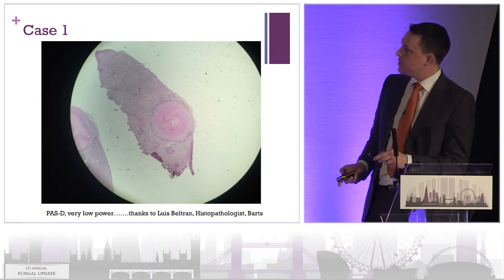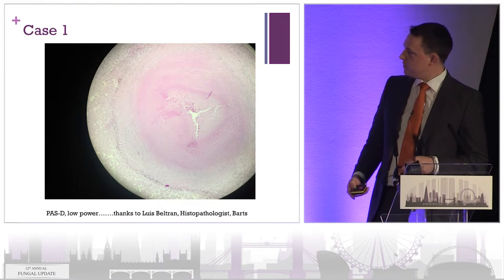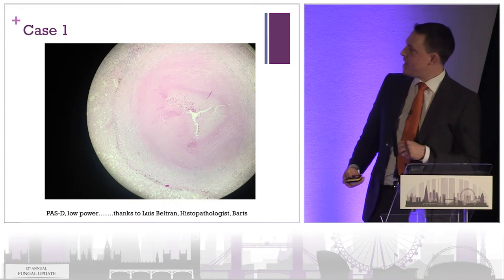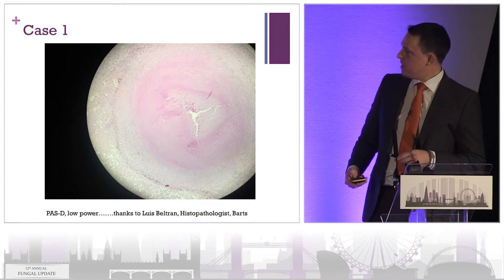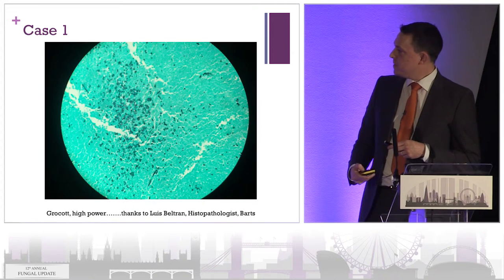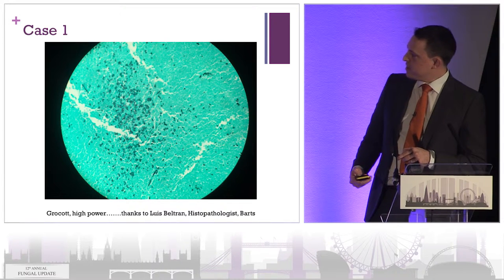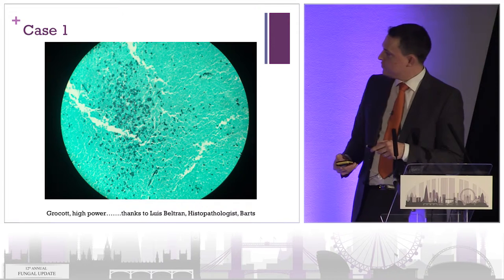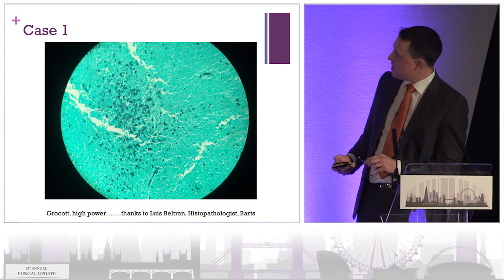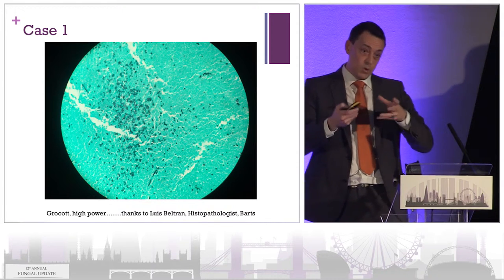This is what the histology shows. I'm no histopathologist, but this is a chunk of liver — part of it is normal, part is not normal. On slightly higher power, this shows an area of necrosis surrounded by epithelioid macrophages. You can get a sense there's something in the middle of that granuloma. On a Grocott stain, you can see lots of cystic lesions and things that look like yeast — lots of yeast with possibly some pseudohyphae. So he has a granulomatous process in his liver in which we can see what look like fungal elements.